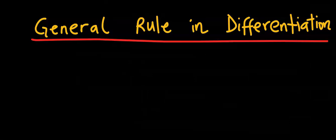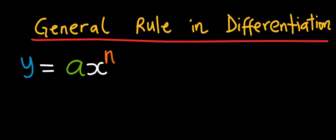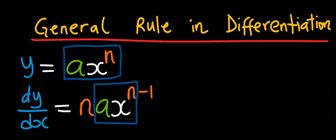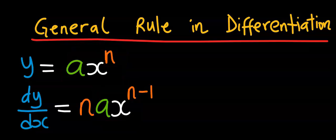The first thing is the general rule in differentiation. Given that y is equal to ax to the power of n, then dy/dx will be equal to n multiplied by ax to the power of n minus 1. Only n at the power makes the movement — the n comes down and equally subtracts one at the power. This is the general rule to always remember when solving differentiation of basic functions.